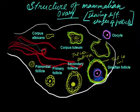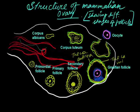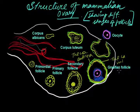This is the primordial follicle. Here the different stages of the follicles are mentioned: the primordial follicle, the primary follicle, the secondary follicle, the mature follicle, and the Graafian follicle, which is composed of two cell layers.